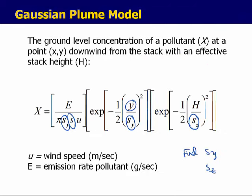To summarize what's needed: plug everything into the main equation. E is the emission rate. Wind speed mu — if you don't know it at your elevation Z, you use the relationship just shown. If you don't know your effective stack height, there's a formula for that. Now we'll look at how to find S of Y and S of Z.